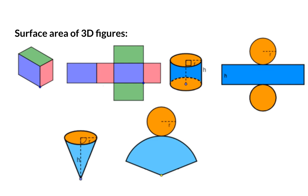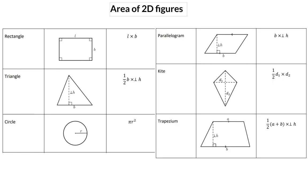For this, you need the area formulas for all the two-dimensional figures. Or you can also choose to study the specific formula for each three-dimensional figure on their own. Here we have the six two-dimensional figures that you need to know the area formulas of. The three on the left are the well-known rectangle, triangle, and circle. And even though the parallelogram, kite, and trapezium are not seen that often, you also need to know their formulas.